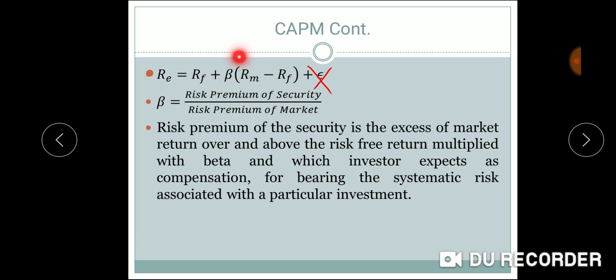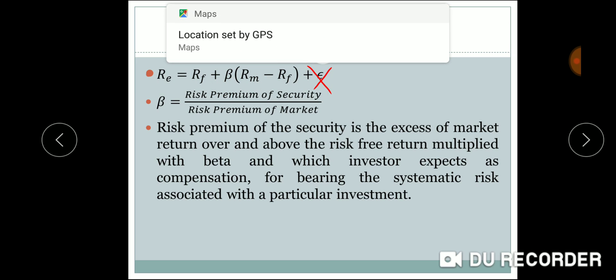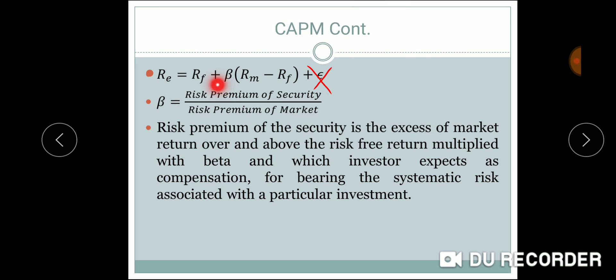The base return is the risk-free return. If you have a beta, you can get the security return. You can also compute the beta times (Rm − Rf) portion and add it up. Beta can be calculated as the return of the security divided by the return of the market.